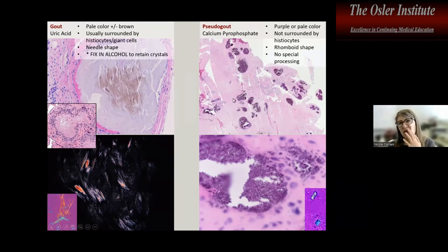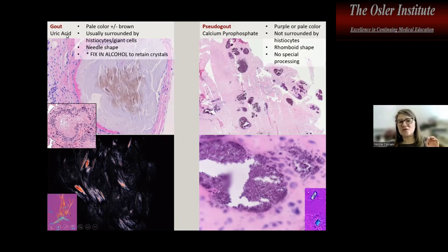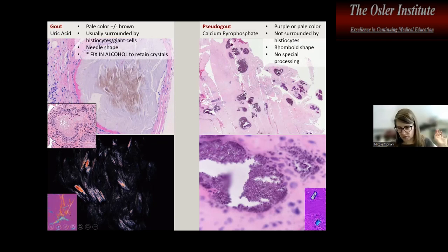Gout crystals dissolve in water — and formalin is water-based — so if you have clinical suspicion for gout, try to process the specimen in 100% alcohol without formalin. You will retain the gout crystals better; otherwise they drop out of the tissue.